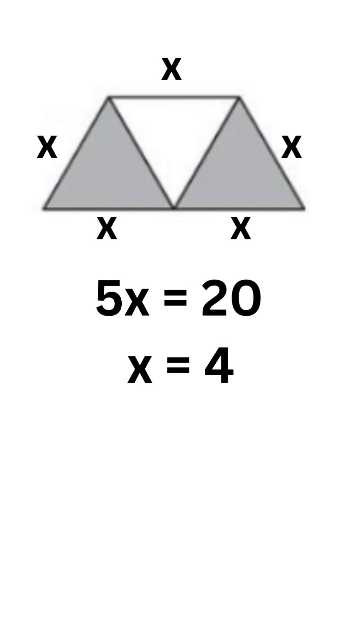Solving for x, I get x equals 4. So that means the base of the equilateral triangle is 4 and I want to calculate the height. So I'm going to use what I know about 30, 60, 90 triangles and I would get a height of 2 root 3.